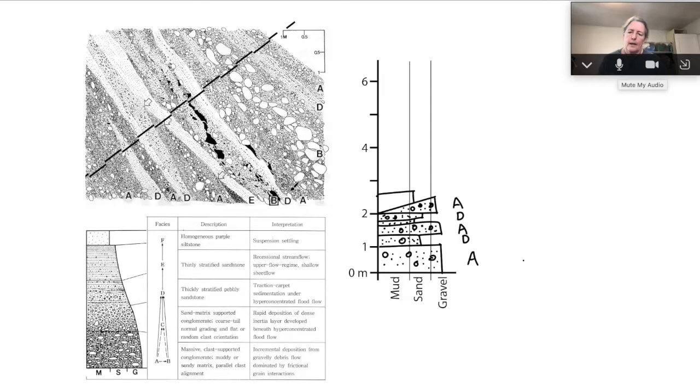This one doesn't have pebbles in it, so even though the grain size is similar to this one before, it's thick enough to be called a new facies. I'm not sure that this lower part here might also be facies E, so I'll put an E for facies E.